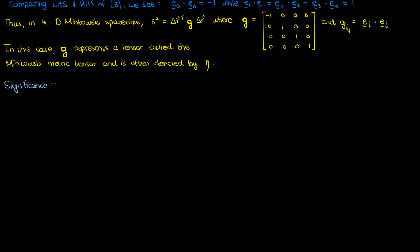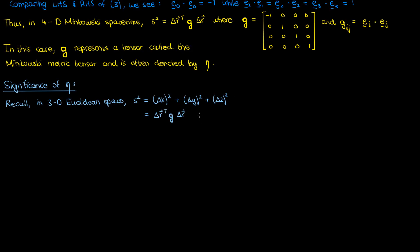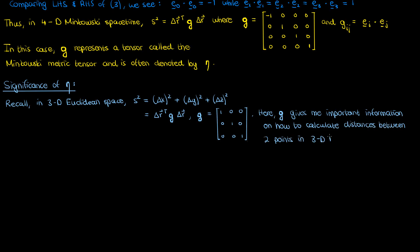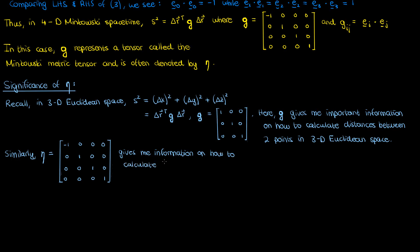It might not be obvious what the significance of the Minkowski metric is right now, but recall that in three-dimensional Euclidean space the matrix g — the identity matrix — told me to simply sum the squares of delta x, delta y, and delta z to get the distance. In other words, the metric tensor gives valuable information about how to calculate the distance between two points. The same principle applies to eta, the Minkowski metric: it tells you to take the negative square of the time component and the positive squares of the spatial components to get your spacetime distance.